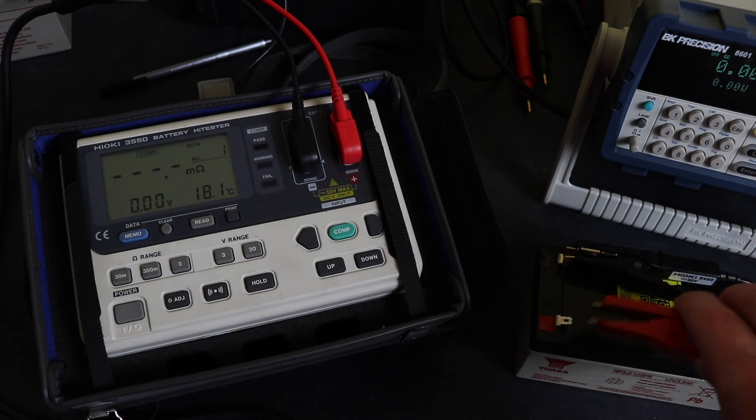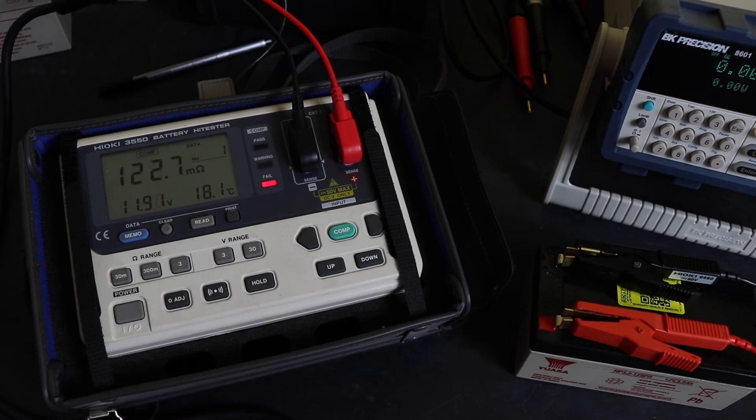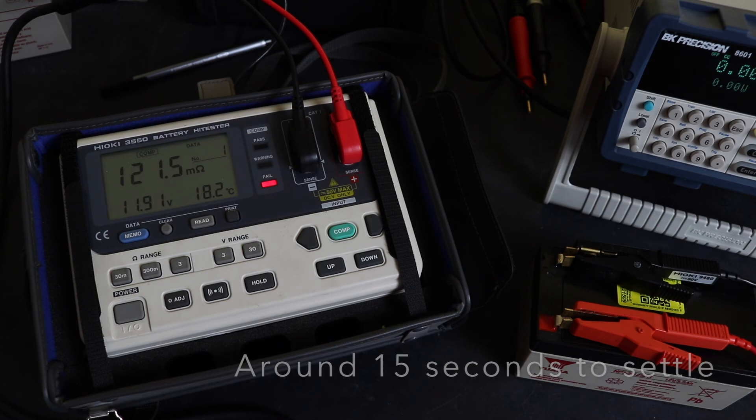This is the old instrument. We've got 119, 122 milliohms, still flickering a bit. Obviously we see we've got the fail light on because the resistance has increased. It's fairly steady - 121.3, 121.4-ish.